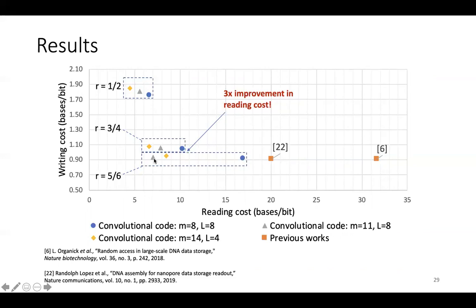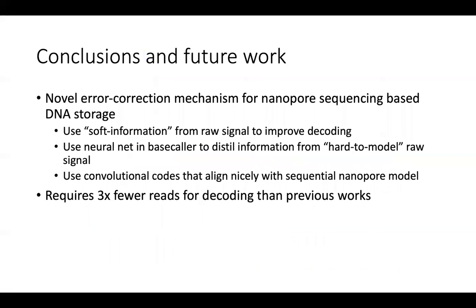In summary, we have presented a novel error correction mechanism for nanopore sequencing based DNA storage. The three key ideas are: first, we use soft information from the raw signal to improve decoding rather than relying on just the base-called sequence; second, since modeling the raw signal is very hard, we use the neural network in the base caller to distill this information into a more usable form; and third, we use convolutional codes that align very nicely with the sequential nanopore model. The results show that this requires three times fewer reads for decoding compared to previous works.